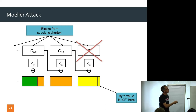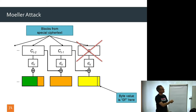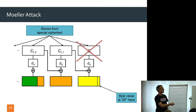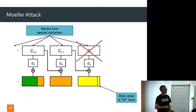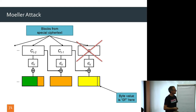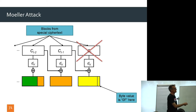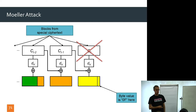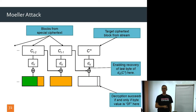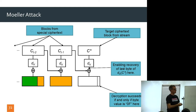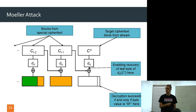We have our special ciphertext blocks. CT is the last one — it's all padding, shown in yellow. The previous block contains the MAC value. CT is the target block C star, whose last byte of plaintext we'd like to learn. We remove CT and replace it with our target block C star — the block for which we want to learn the last byte of plaintext.